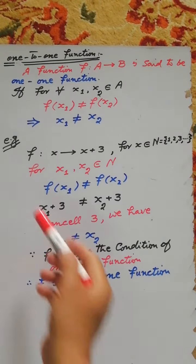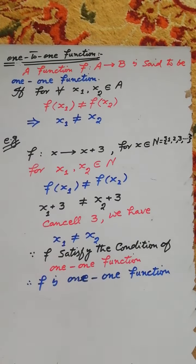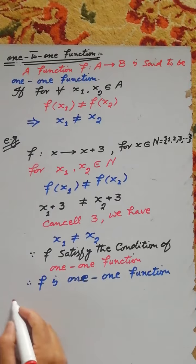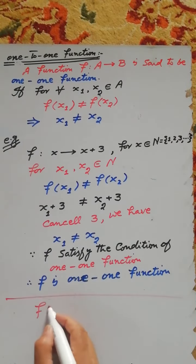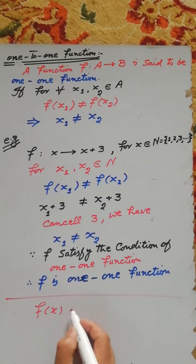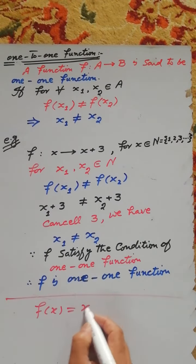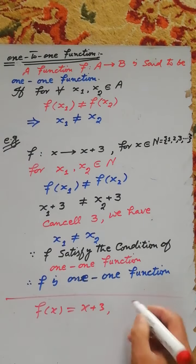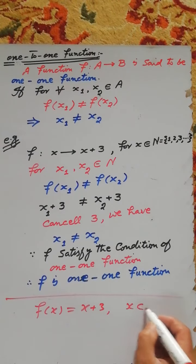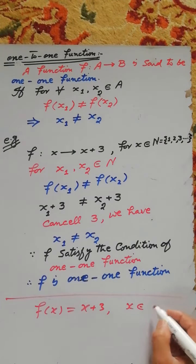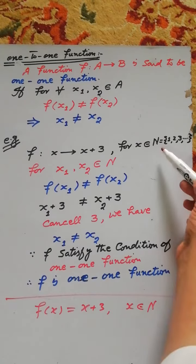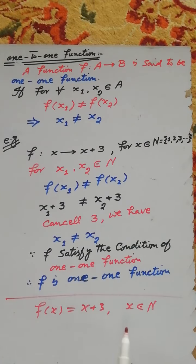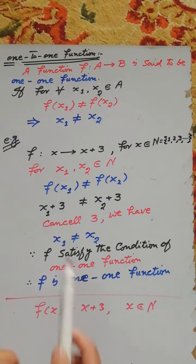For example, consider the function f(x) = x + 3, where the domain set of this function is the set of natural numbers. We want to check that the given function is a one-to-one function.